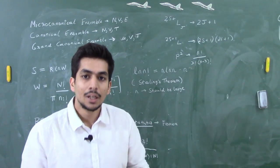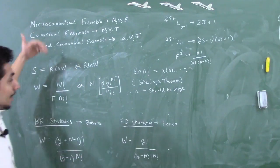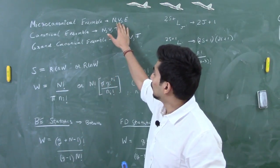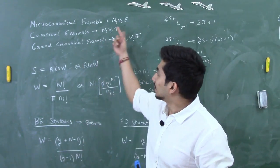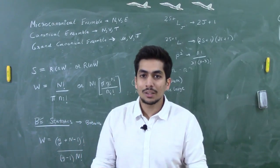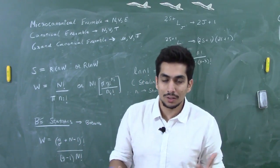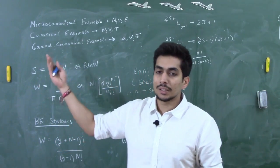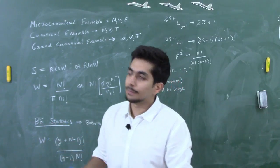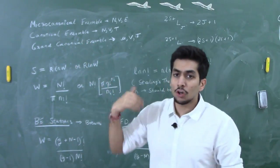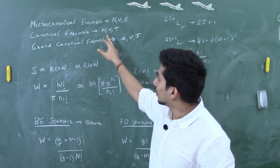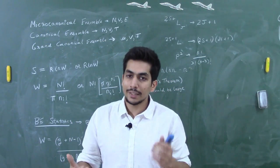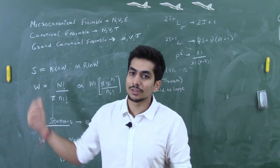First, what is a micro-canonical ensemble? It is a system with constant N, V, and E — where N is the number of particles, V is the volume, and E is the energy. You can think of it as an isolated system. In the GATE exam, it was asked what the three constants of a micro-canonical ensemble are. In a canonical ensemble, N, V, and T are constant — number of particles, volume, and temperature — so it's like keeping a closed system in a heat bath.